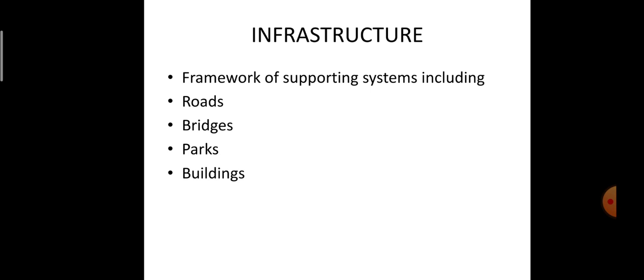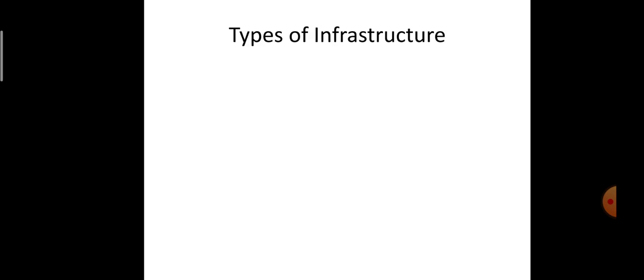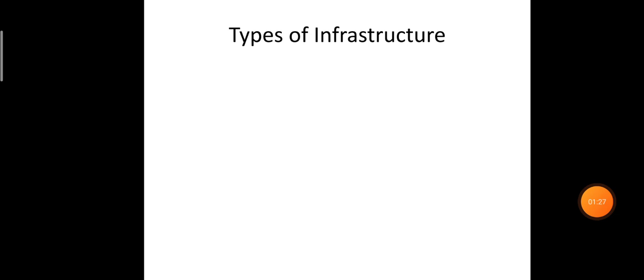Economically, infrastructure refers to the structural systems that allow for the production of goods and services without themselves being part of the production process. The word 'infrastructure' is a combination of 'infra' and 'structures.'